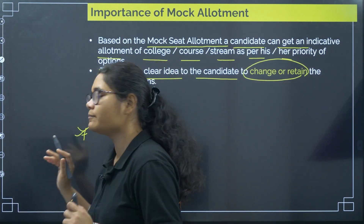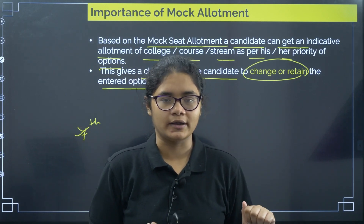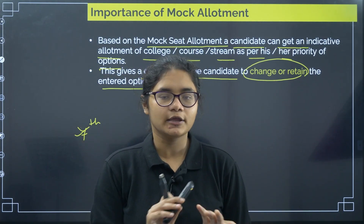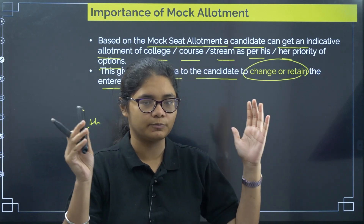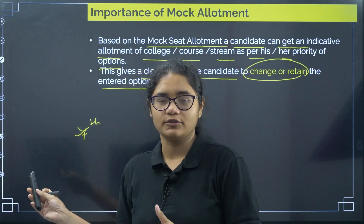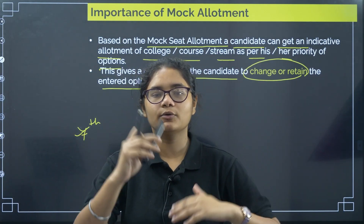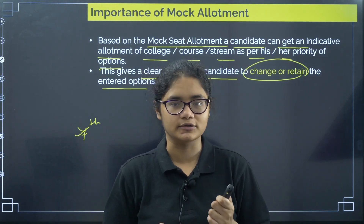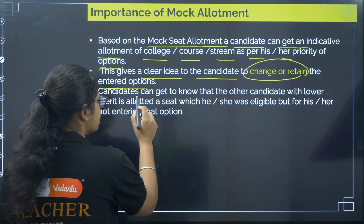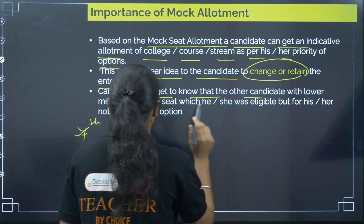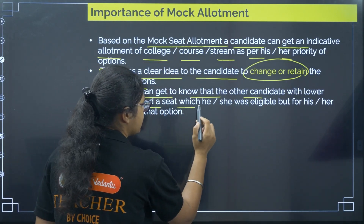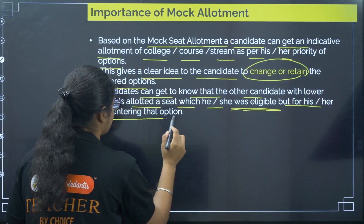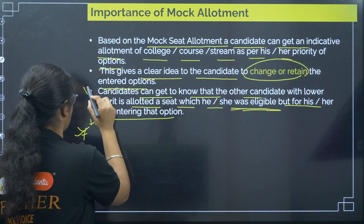Suppose you got the 7th option and you are happy with the allotment — you were wanting this one and you got it. In that case, you will retain your option entry. But suppose you got the 7th option and you are not happy with it — you can rearrange your options so that you can get the best option for yourself. Now, candidates can also get to know what another candidate with a lower merit has been allotted — a seat which he or she was eligible for but missed by not entering that option. This is one very important point.